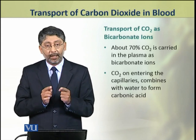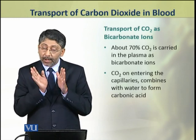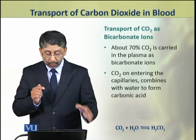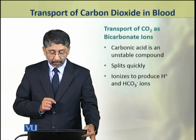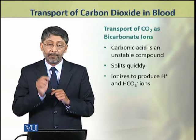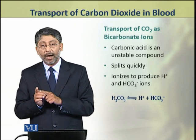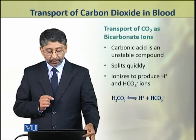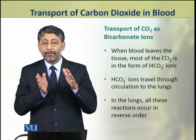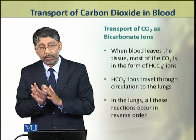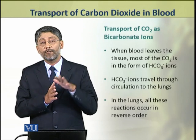How are bicarbonate ions formed? When carbon dioxide enters the blood plasma in the capillaries, it combines with water to form carbonic acid. This carbonic acid is an unstable compound, so it splits quickly and ionizes to produce hydrogen ions and bicarbonate ions. By the time blood leaves the tissue, most of the carbon dioxide has already taken the form of bicarbonate ions, and throughout its circulation it remains in that form.